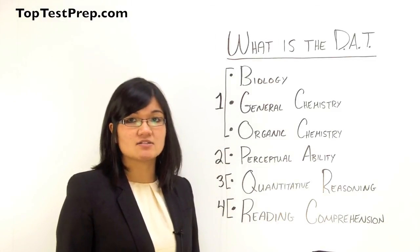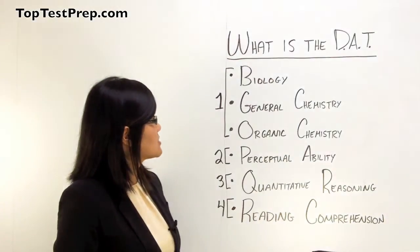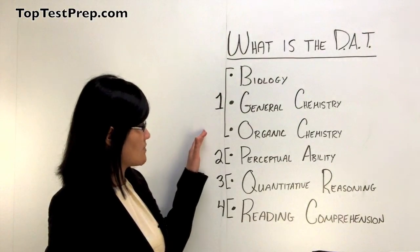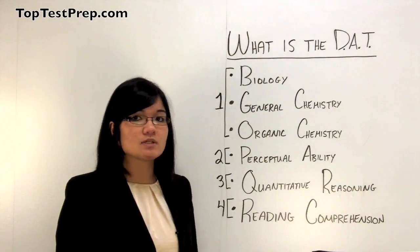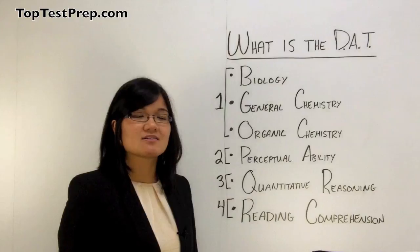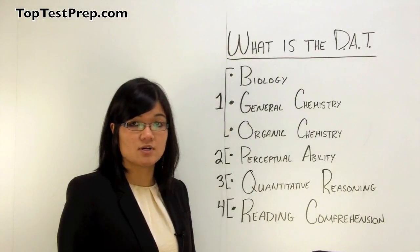The DAT is divided into four distinct sections. A survey of the natural sciences, which is composed of biology, general chemistry, and organic chemistry. A perceptual ability test, which will test your ability to synthesize and reason three-dimensional structures.